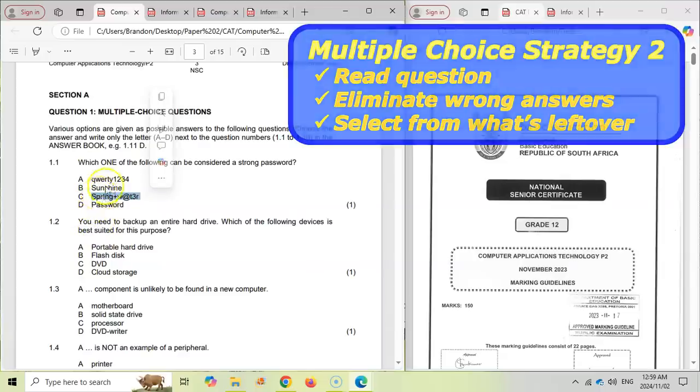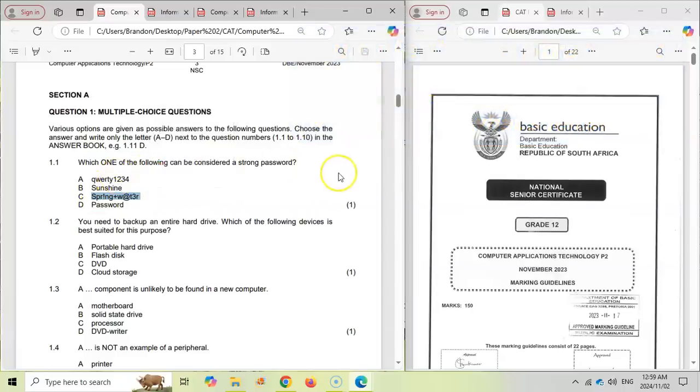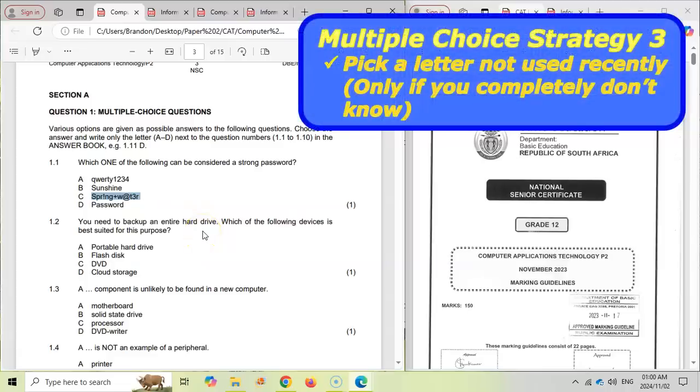First option, read the question and you know what the answer is and then if you can't do that then go eliminate the options that are definitely not the answer and then you can pick the right one from what's left over. And then the third option is I haven't had a B for a while but I wouldn't recommend using that as the first option. Try the first two first.